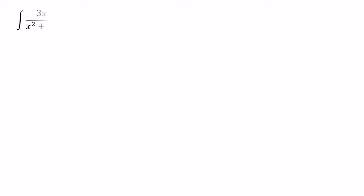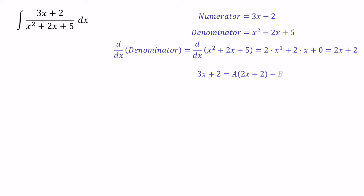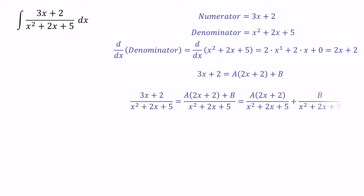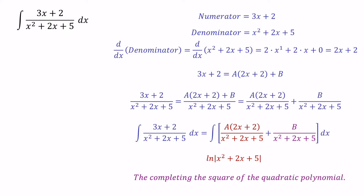Before we start anything, let's think about how we can solve this question. Here we have a linear polynomial in the numerator and a quadratic polynomial in the denominator. We need to express the numerator using the differentiation of the quadratic polynomial with constant values. Then we can divide the numerator values by the denominator separately, giving us two parts. The first part integrates as ln of the denominator, and the second part we simplify using completing the square of the quadratic polynomial.